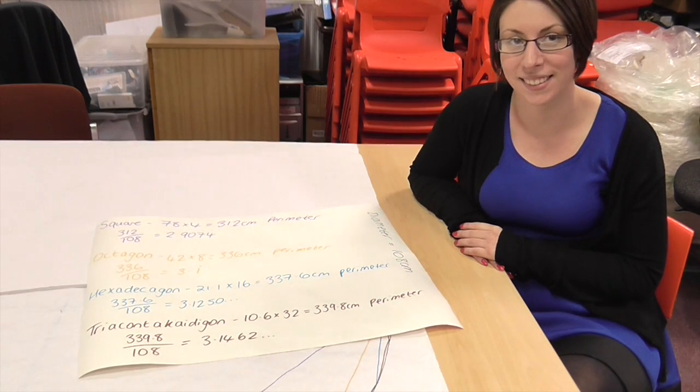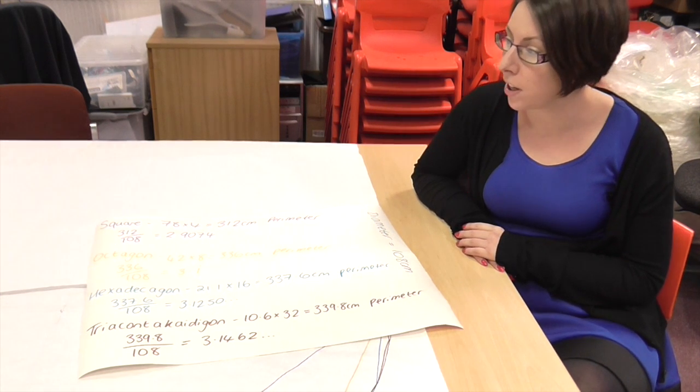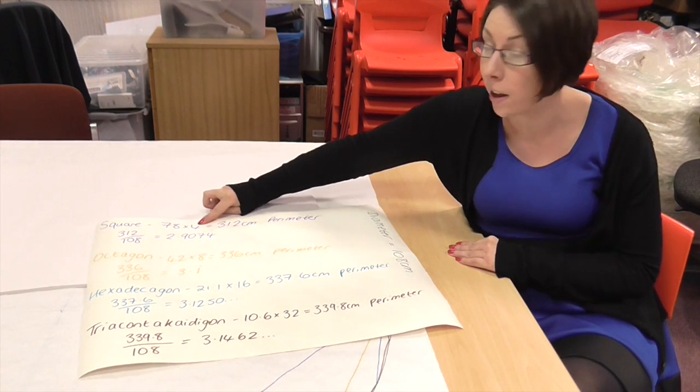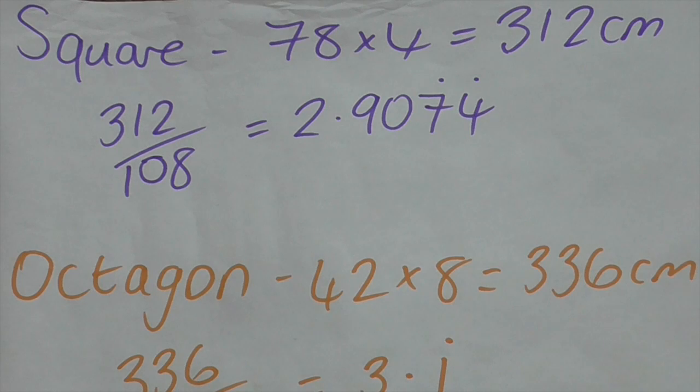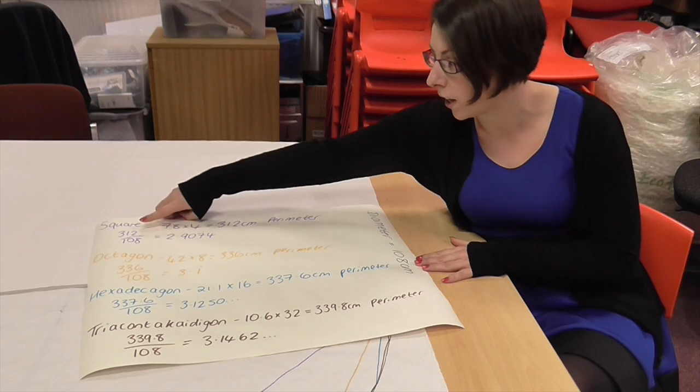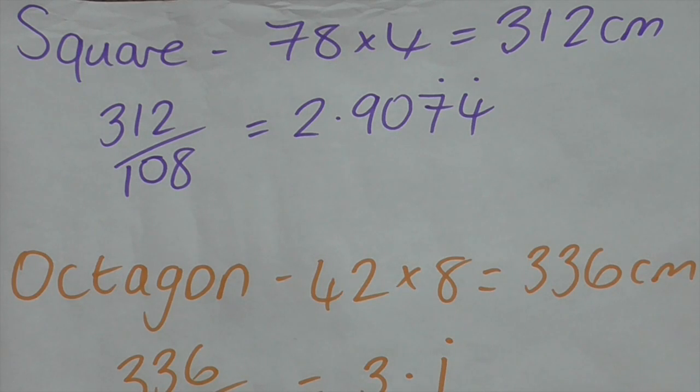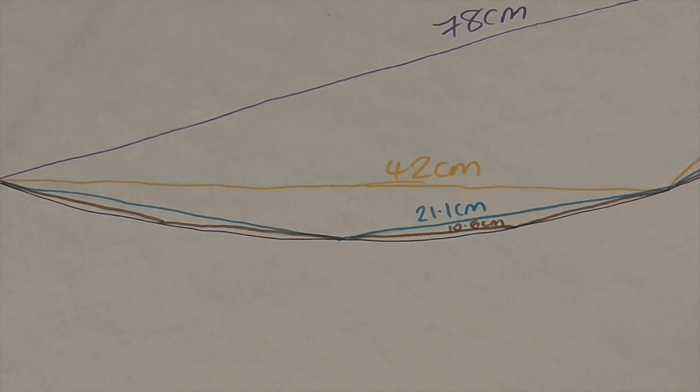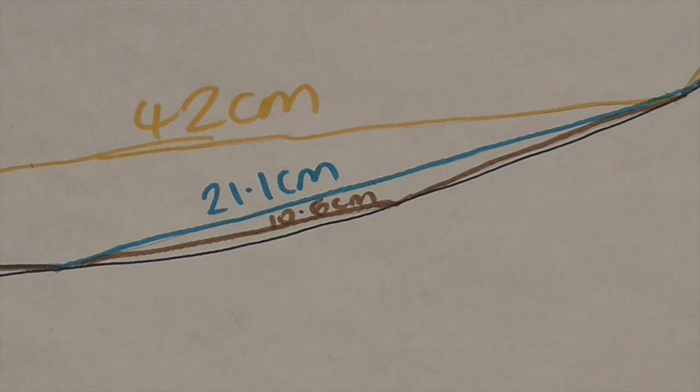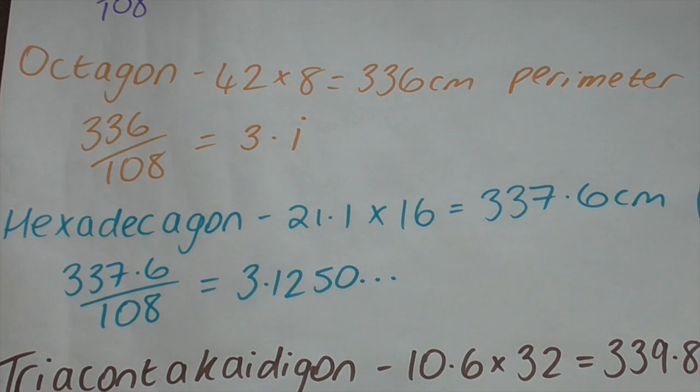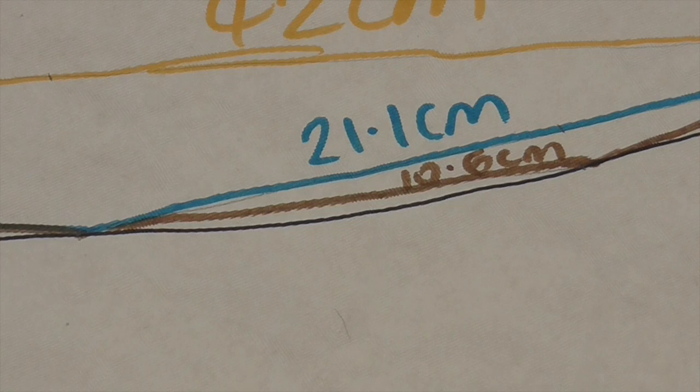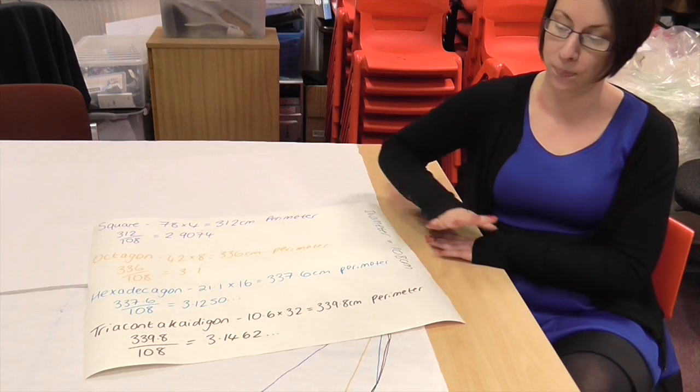So Sam, how close have your polygons got you to pi? Pretty close, it's gone pretty well. So the square, I measured the size of the square to be 78 centimeters and obviously there's four sides in a square. So the perimeter of the square was 312 centimeters. The diameter of the whole thing, well of the circle, was 108 centimeters. So divided the 312 by 108 gave about 2.9. The octagon, so each edge there measured 42 centimeters, gave us 3.1 recurring. Then the 16 sided shape had each edge measure 21.1 centimeters, gave us 3.1250. And the 32 sided shape that had each edge measure 10.6 centimeters, gave us 3.1462. It's pretty close!